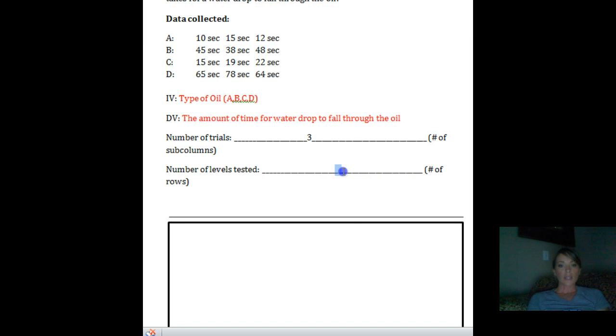How many levels were tested? How many levels of independent variable? That's going to be my number of rows. Well, they tested three different levels of IV, or excuse me, four different levels of IV, A, B, C, and D. So that's going to be four.